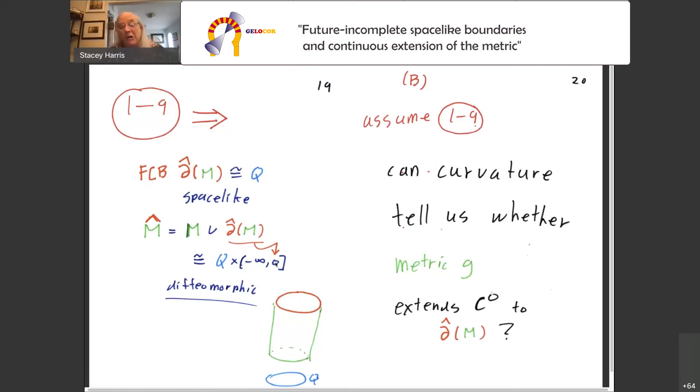Part B, so what about extending the metric to the boundary? Can curvature tell us whether that happens? Why would I even expect that to be the case? Because in the Riemannian case, where we have a point singularity or a putative singularity, there is a result of Dean and Yang from I think the 70s, maybe the 80s, saying that if the square root of the sectional curvature going out to the pointlike singularity is integrable, then it really wasn't singular anyway and you can extend the metric. And that was what I was trying to emulate in the Lorentzian case, only doing it not with a point singularity, but with a spacelike hypersurface singularity.